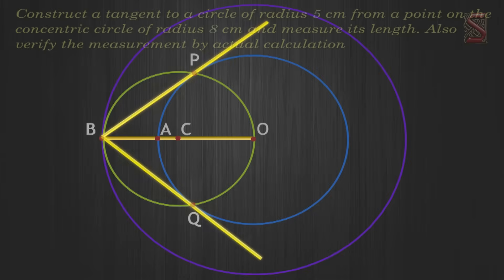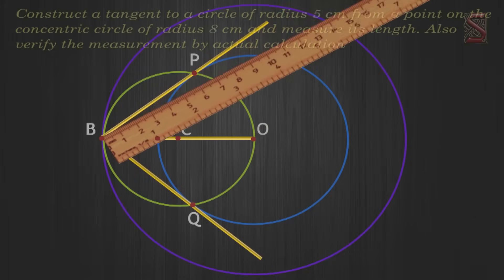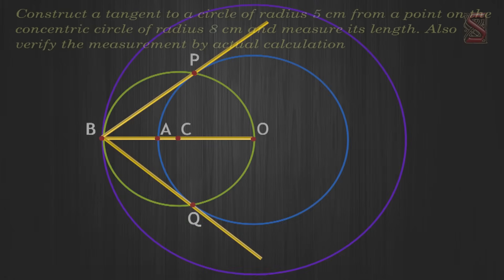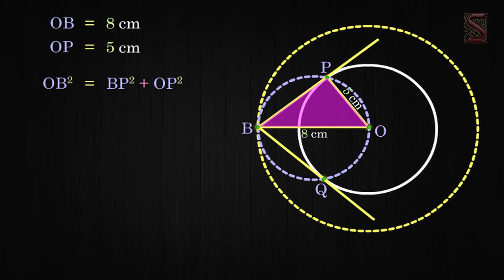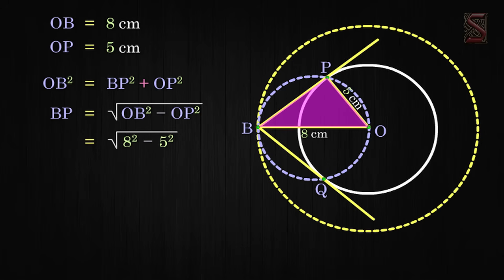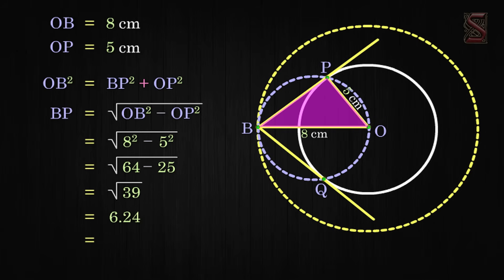BP and BQ are the required tangents. The measured lengths are 6.2 cm. In triangle BPO, we have OB equal to 8 cm and OP equal to 5 cm. So BP equals the square root of OB squared minus OP squared, which is the square root of 64 minus 25, equal to the square root of 39, which equals 6.24 cm, approximately 6.2 cm.